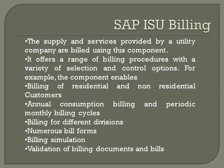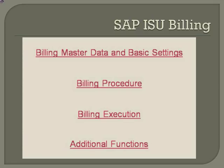SAP ISU Billing has four components: the billing master data — also called the billing engine — the rate structure, the billing procedures, and the actual billing execution, whether single bill or mass billing. Additional functions are also associated with ISU billing.